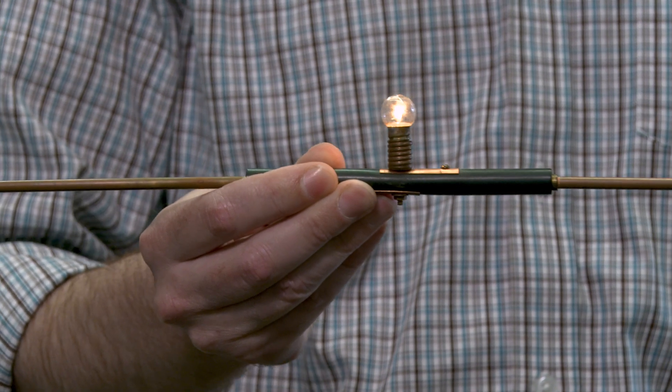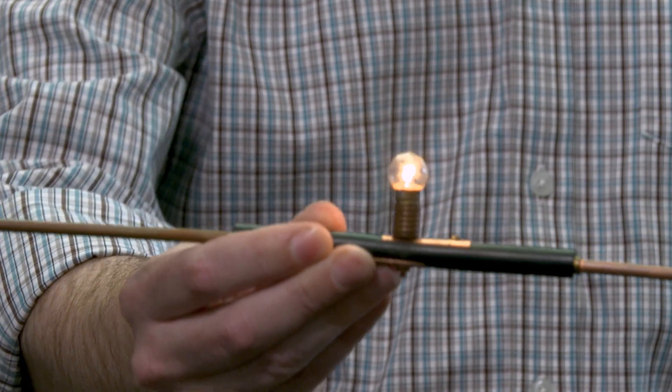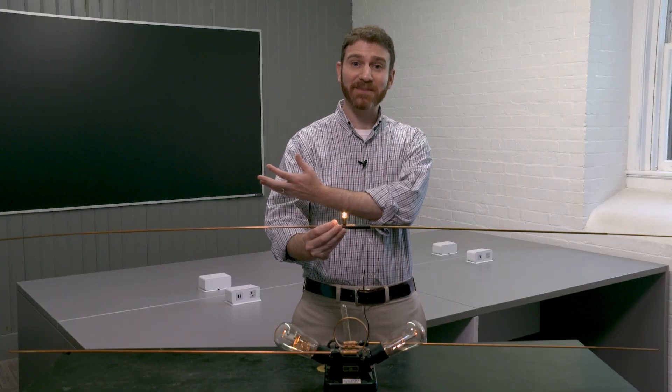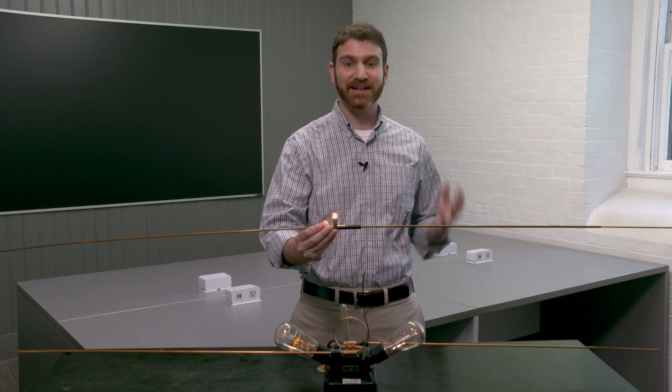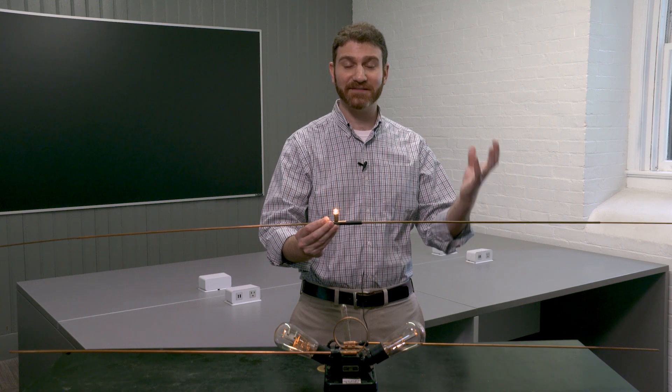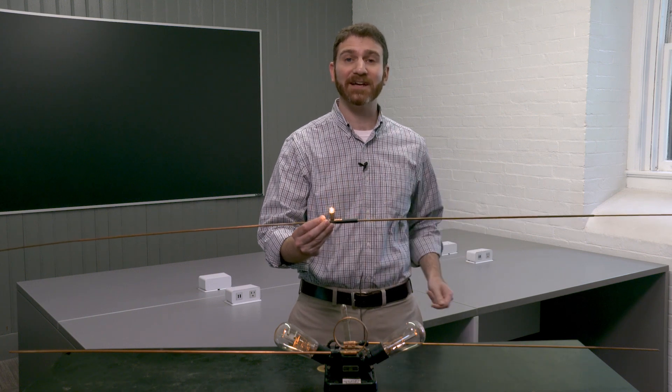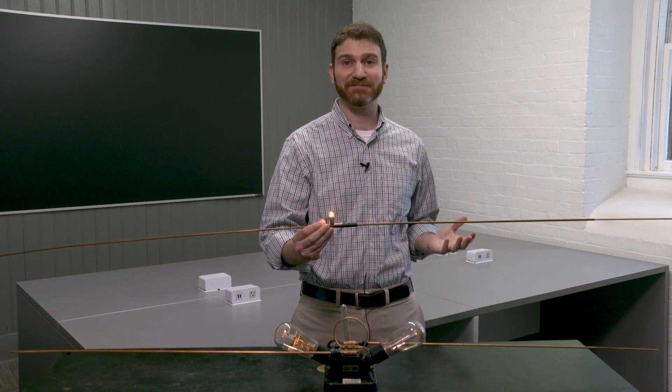As I bring the antenna close to it, that light bulb lights up. So this piece of metal is serving the same purpose that that infrared camera did. It's detecting the radio waves, receiving them, and lighting up the light bulb as an indication that they've been received.